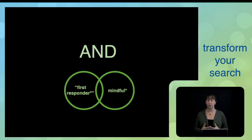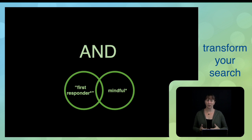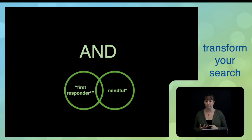AND, on the other hand, is used to combine the different components of your research question. In this case, first responder is one component and mindfulness is another. When you search first responder AND mindfulness, you're telling the database to retrieve any item that includes both terms but neither one alone. This narrows down your search results really well and ensures that irrelevant items aren't included — for example, research on first responders dealing with injuries, shortages, or languages spoken, which wouldn't be relevant to the mindfulness question you're looking for.